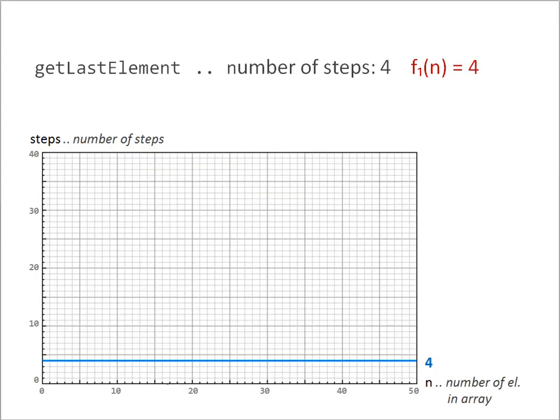This here is our first graph. On the horizontal axis, we have N. N is the number of elements in the array, the input size. On the vertical axis, we have steps, the number of steps that have to be executed in order to run the method with input size N.